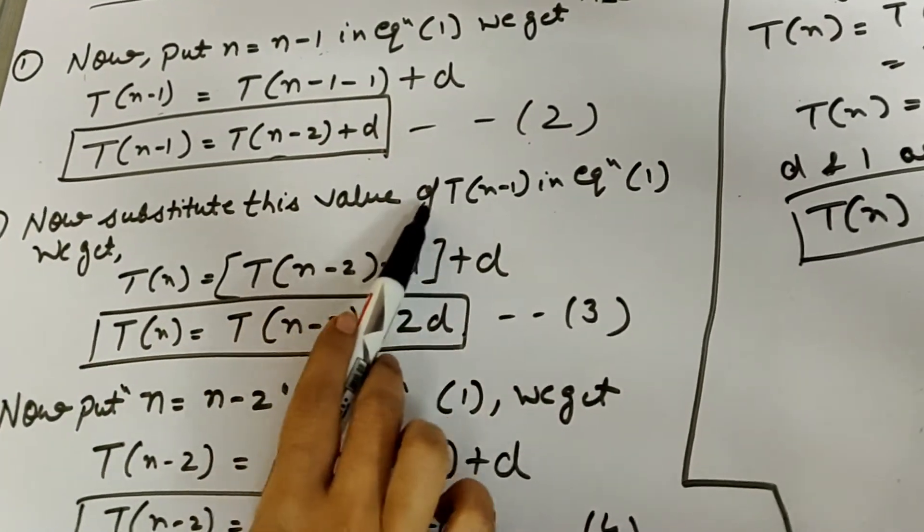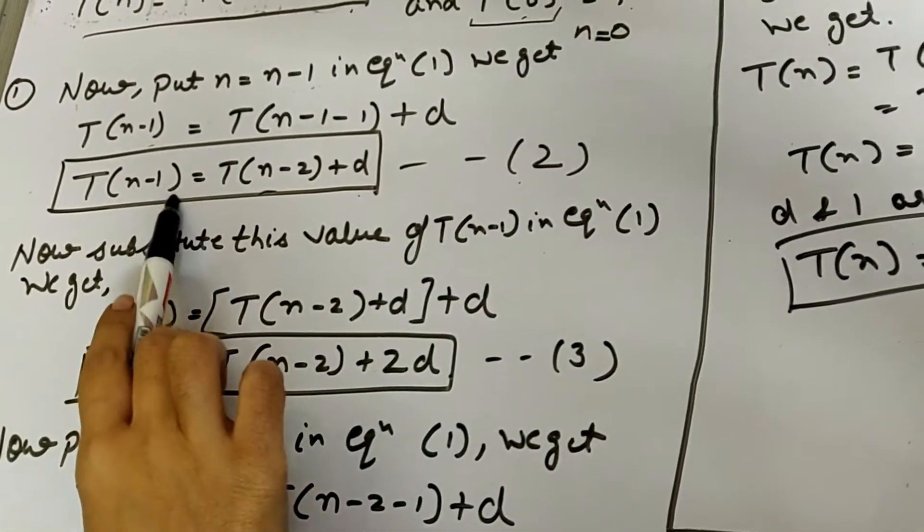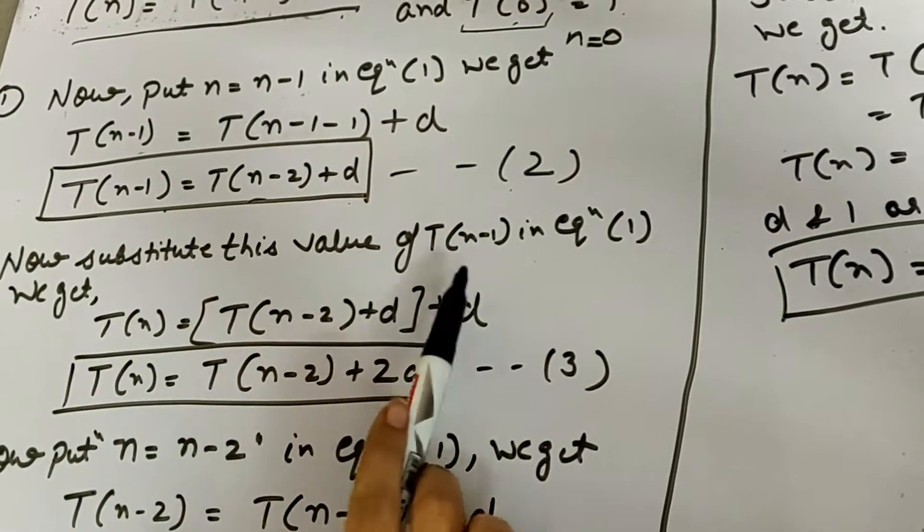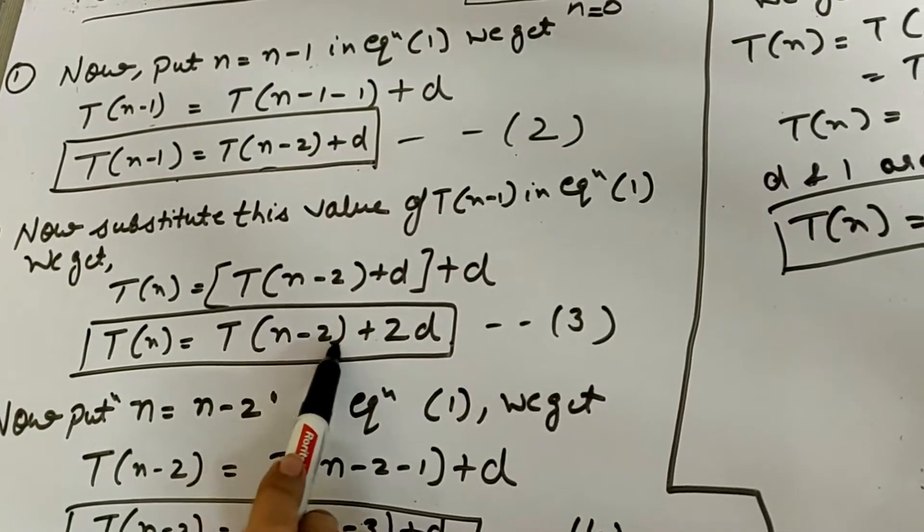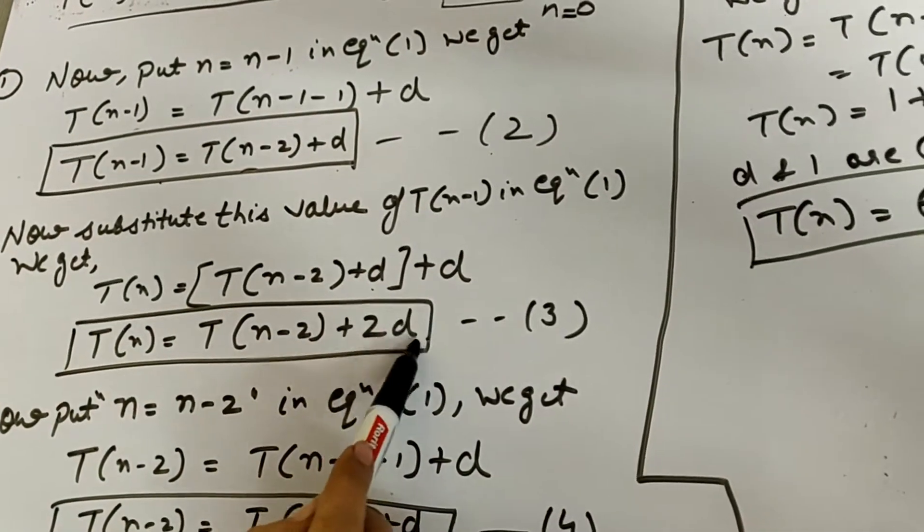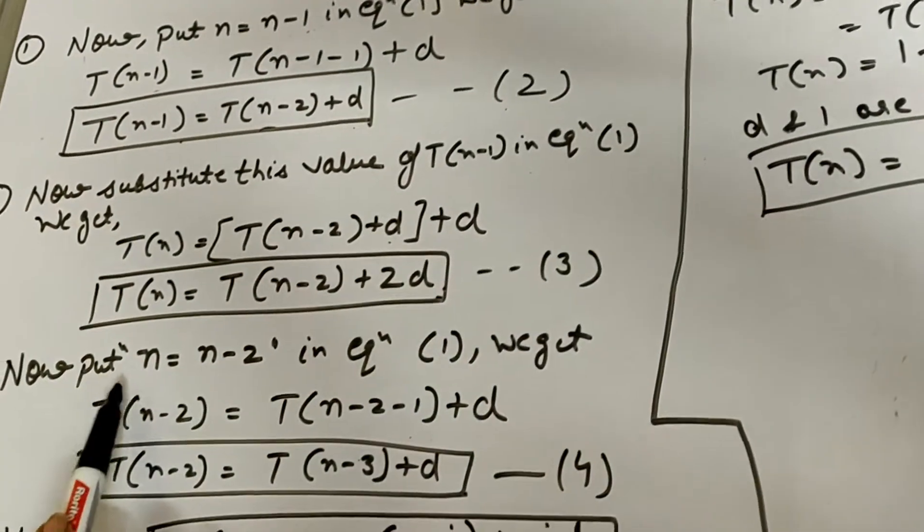Now substitute this value of T(n-1) which we have generated here. If we put it in equation 1, then we generate a new form: T(n-2) plus 2d this time.